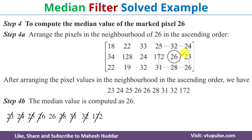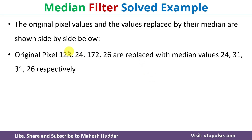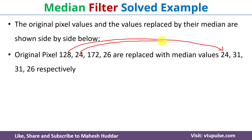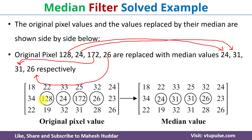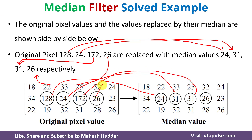To summarize: for pixel 128 we got the median value as 24, for pixel 24 we got 31, for pixel 172 we got 31, and for pixel 26 we got 26. So we replace 128 by 24, 24 by 31, 172 by 31, and 26 by 26. This is how we find the median value for the marked pixels.